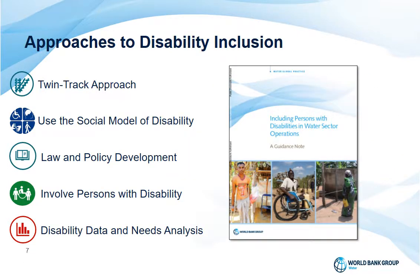There are different actions we can take for disability inclusion. First, we can consider a TwinTrack approach, which means mainstreaming and targeting — mainstreaming disability into consultations, needs assessments, infrastructure development and services, but also undertaking targeted disability-specific activities. Using the social model of disability means thinking beyond disability as a medical condition and considering social and institutional issues that lead to exclusion. Then, regarding law and policy, it's important to have in place laws and policies that address the needs of disabled people.